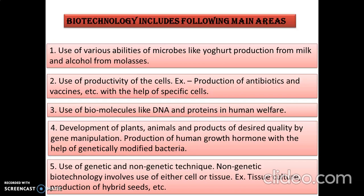Production of human growth hormone with the help of genetically modified bacteria is also an area of biotechnology. Additionally, use of genetic and non-genetic biology involves use of either cell or tissue, like tissue culture and production of hybrid seeds. These are all the areas where biotechnology is useful.